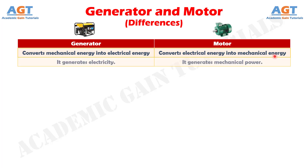Number 2. A generator generates electricity, whereas a motor generates mechanical power.